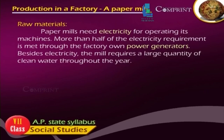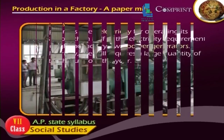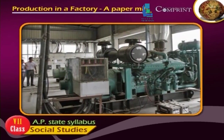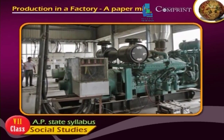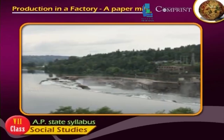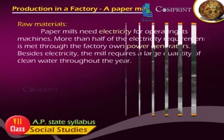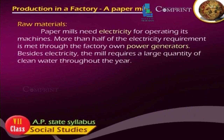Paper mills need electricity for operating their machines. More than half of the electricity requirement is met through factory-owned power generators. Besides electricity, the mill requires a large quantity of clean water throughout the year.